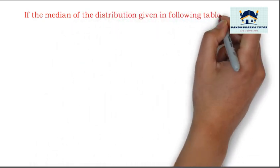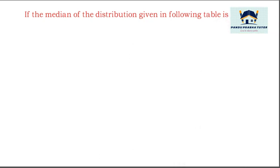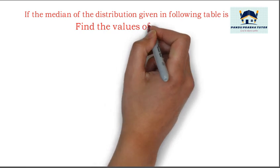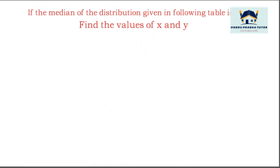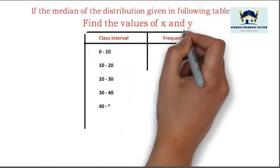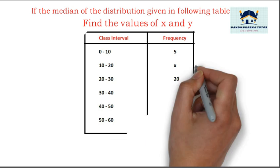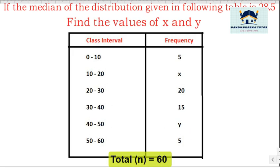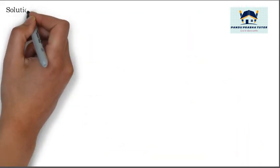If the median of the distribution given in the following table is 28.5, find the value of x and y. The class interval and frequency are given, median is also given. We have to find x and y values. We will go for the solution.